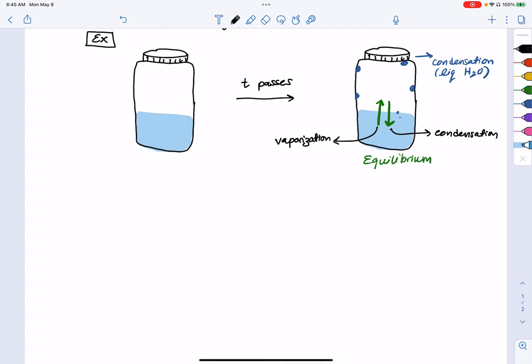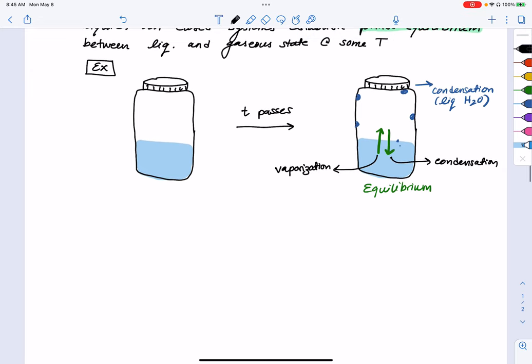That is established or set up. And the amount of vaporization that you see is going to depend on your temperature. So how much condensation observed depends on temperature, because the amount of condensation is due to there being gaseous particles that then recondense on the cold sidewalls.